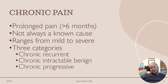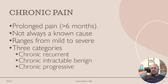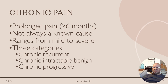Chronic pain lasts over six months and could be forever. It's not always known what the cause is, and it can range from mild to severe. There are three categories. Chronic recurring pain refers to persistent pain that comes and goes over time with recurring episodes, separated by periods of relief. An example is migraine headaches, where individuals experience intermittent severe headaches separated by headache-free intervals.